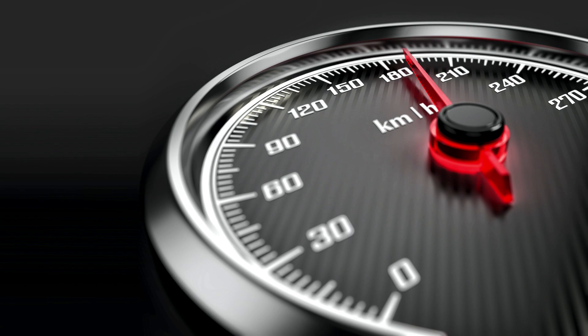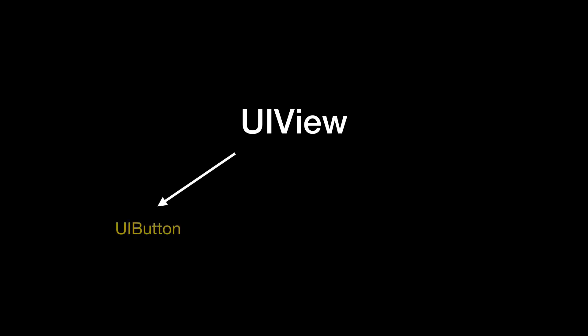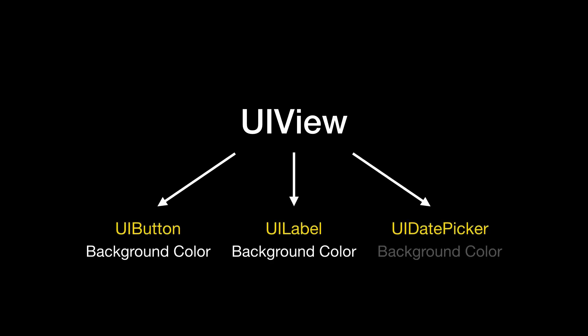In UIKit, every view came from a class called UIView that had many properties and methods — a background color, constraints that controlled how it was positioned, a layer for rendering its content, and more. There were lots of these, and every UIView and UIView subclass had to have them, because that's how inheritance works.